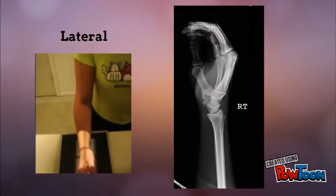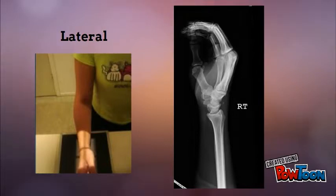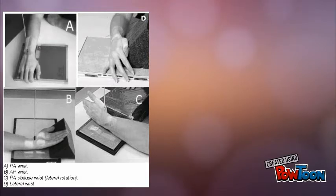For the lateral projection, Derek had Tiara flex her elbow 90 degrees to rotate the ulna to the lateral position and placed the radial surface against the image receptor. The lateral image showed the distal radius and ulna to be superimposed, as well as superimposition of the metacarpals. Technique had been adjusted to ensure that radiographic density was similar in all three images.